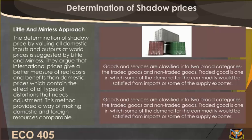Little and Mirrlees Approach. The determination of shadow prices by valuing all domestic inputs and outputs at world prices is suggested by Little and Mirrlees. They argue that international prices give a better measure of real costs and benefits than domestic prices, which contain the effects of all types of distortions. This method provides a way of making domestic and foreign resources comparable.